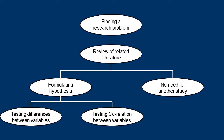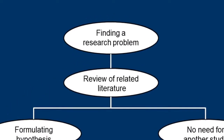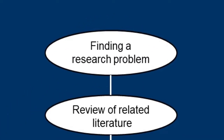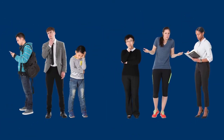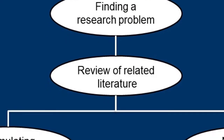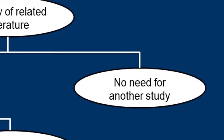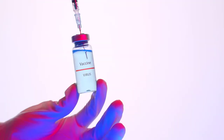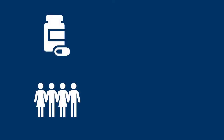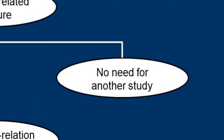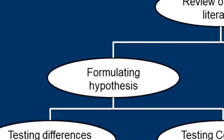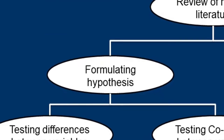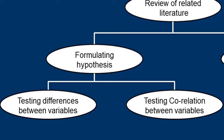Let me provide you an overview. When and how should we test differences between groups or variables? As a researcher, we start with a research problem or research question — for example, men or women, who are better at math? Then you would look into the existing literature. If you find a lot of research on the topic, the conclusion might be no need for another study. But for a different question, such as the effectiveness of a new drug, we would test a group who receives the drug and a group who receives only a placebo. Then we would formulate the hypothesis that this new drug is effective in treating the disease, and test it between different groups.